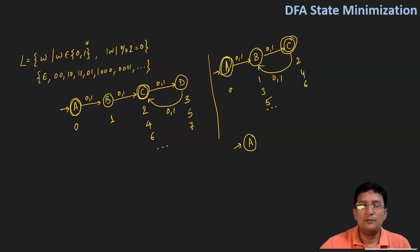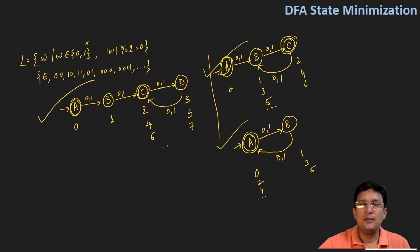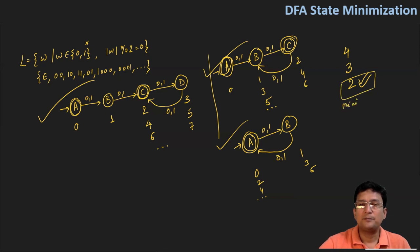I can also form a DFA in a different manner. Let's say A is the start state. If you get a 0 or 1, you reach B, which is a final state. If you get a 0 or 1 again, you reach back to A, which is also a final state. So: zero-length accepted, one-length rejected, two-length accepted, three-length rejected, four-length accepted, and so on. The two-state automata is called the minimal DFA because it has the least number of states among the three.